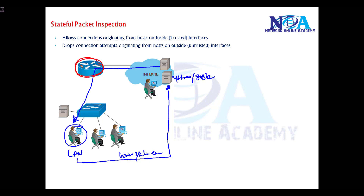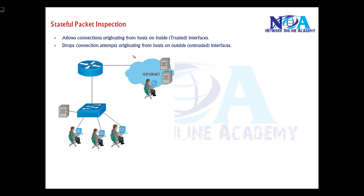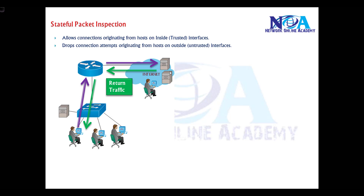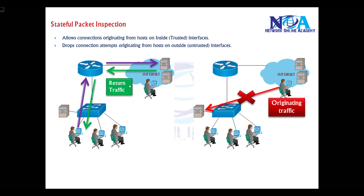We can configure a router or a firewall to allow this behavior. At the same time, any traffic initiated from the outside — for example, an attacker trying to access resources on the LAN — should be denied. Stateful packet inspection means maintaining state tables: traffic from the LAN to a server is allowed and return traffic is permitted, but traffic originating from the outside untrusted network interface should be dropped.